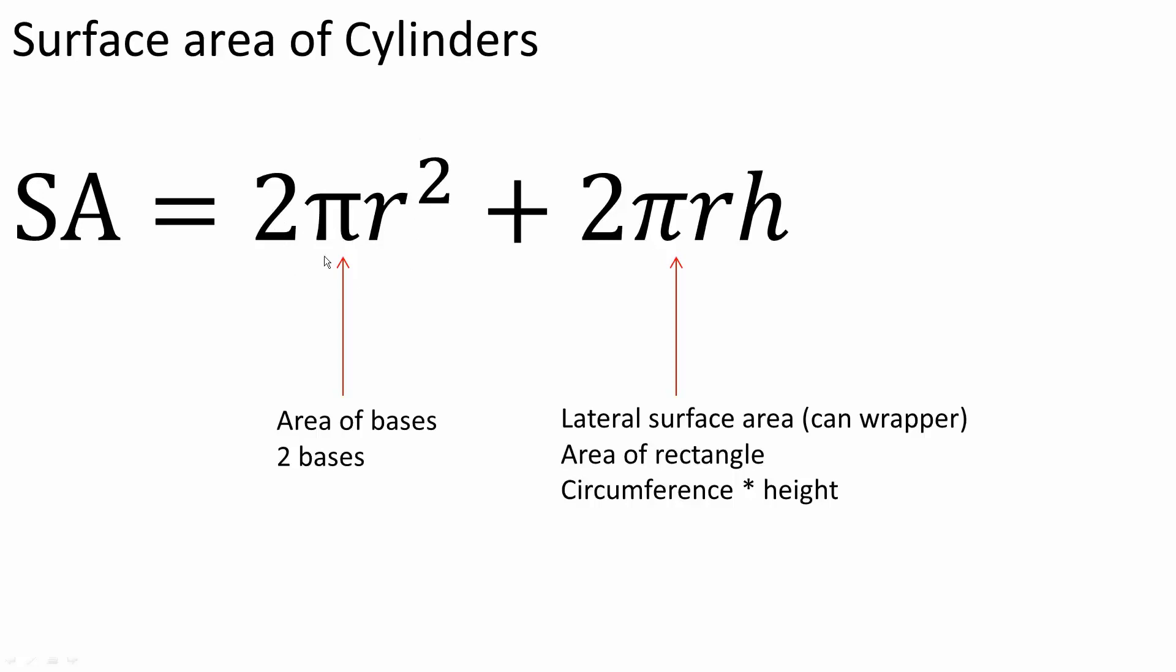Next, the lateral surface area, or you can think about it like a soup can wrapper, which is the area of a rectangle. So it's going to be the circumference times the height. Circumference is 2πr times the height, and that's pretty much it regarding the surface area of a cylinder.